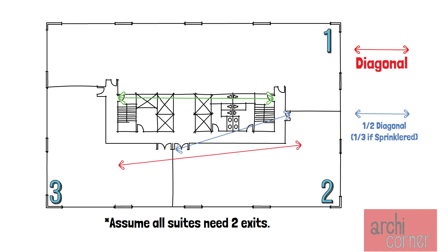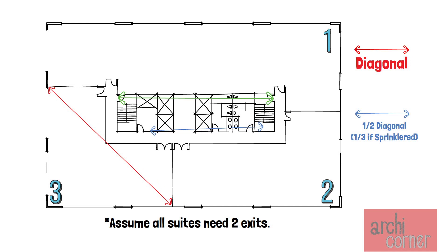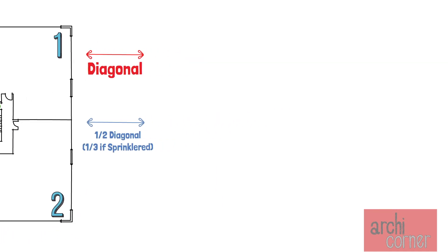Last but not least, suite 3's longest diagonal would be this distance, and likewise these two exits must be at least half the diagonal dimension — or one-third if sprinklered. But we're not done yet.